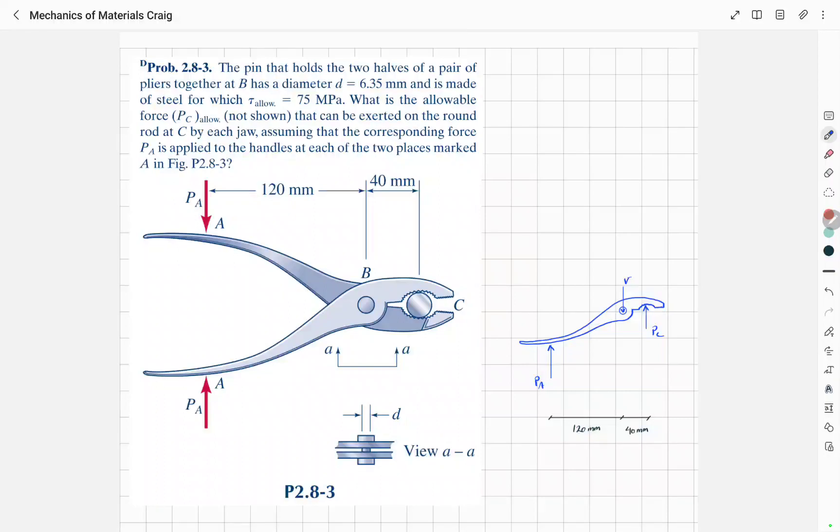Here you can see a plier which is composed of two halves. So this is one of them and this one's the other one, and these two halves are connected together using this pin here and you can also see